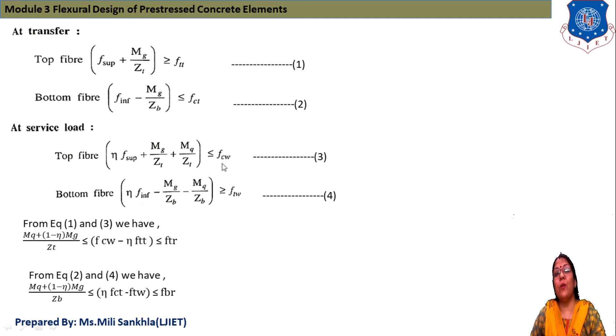At service condition, top fiber: η×F_sup + MG/ZT + MQ/ZT ≤ FCW. Bottom fiber: η×F_inf - MG/ZB - MQ/ZB ≥ FTW. From equations 1 and 3, we conclude: (MQ + (1-η)×MG)/ZT ≤ FCW - η×FTT ≤ FTR. From equations 2 and 4, we conclude: (MQ + (1-η)×MG)/ZB ≤ η×FCT - FTW ≤ FBR.